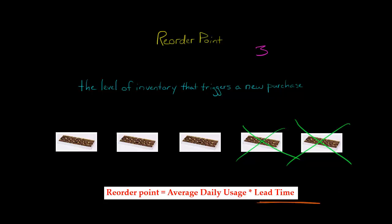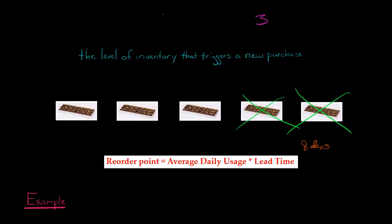Purchase order lead time is the number of days it's going to take us to receive new inventory if we were to make the purchase order today. So if we buy more boxes of chocolates today and it takes eight days for them to arrive, that would be the purchase order lead time. We just multiply the daily usage times the purchase order lead time, and that's our reorder point.